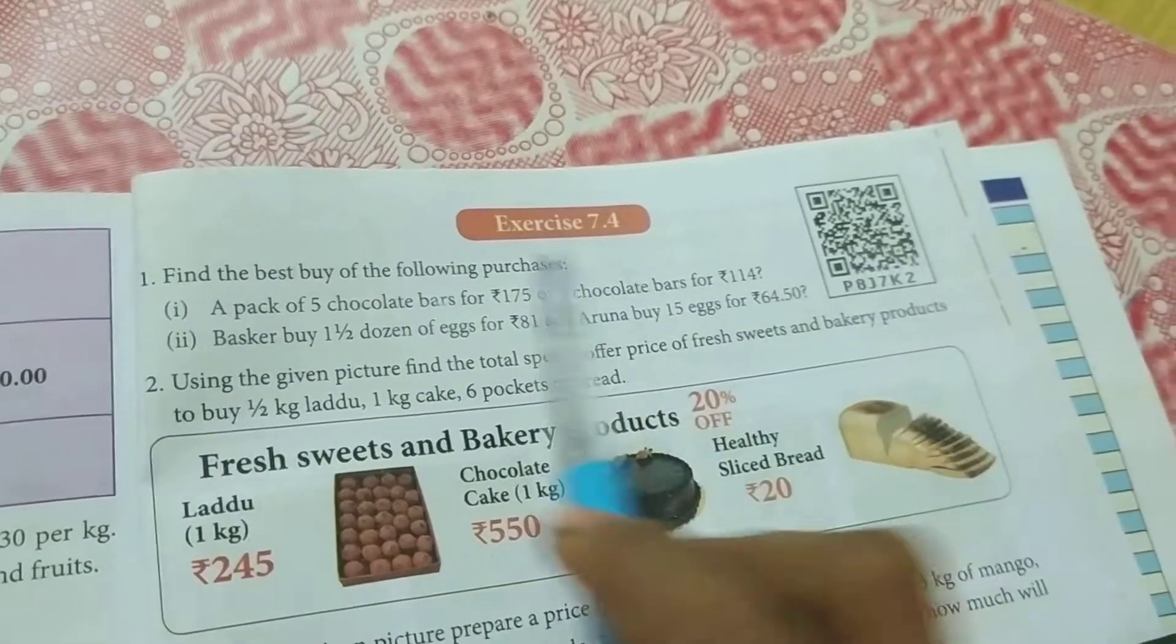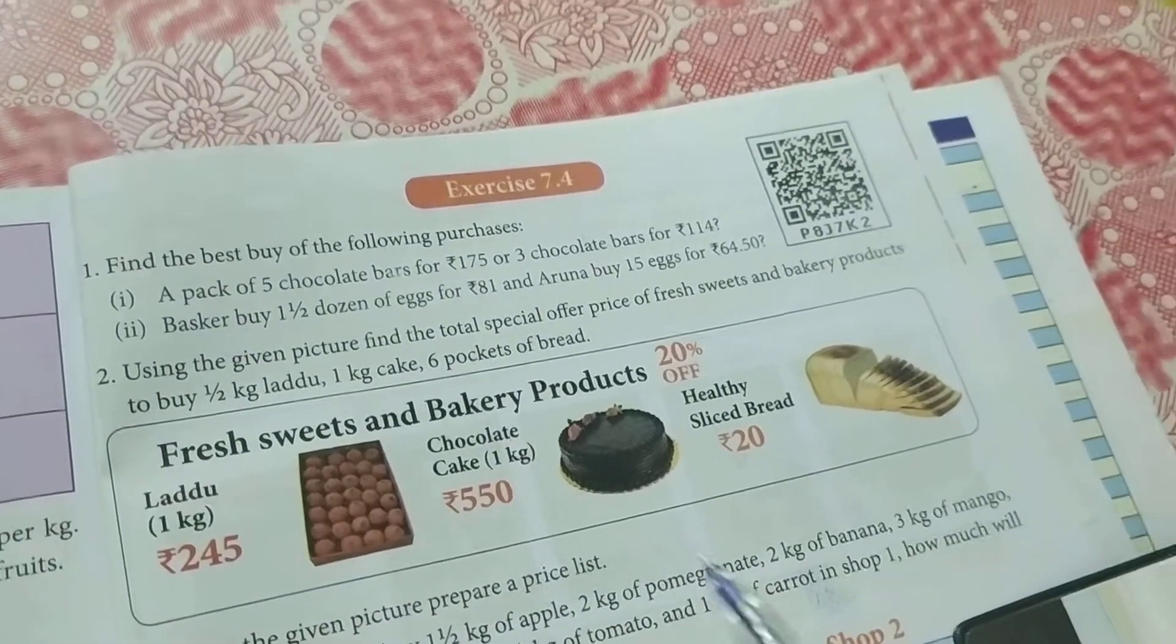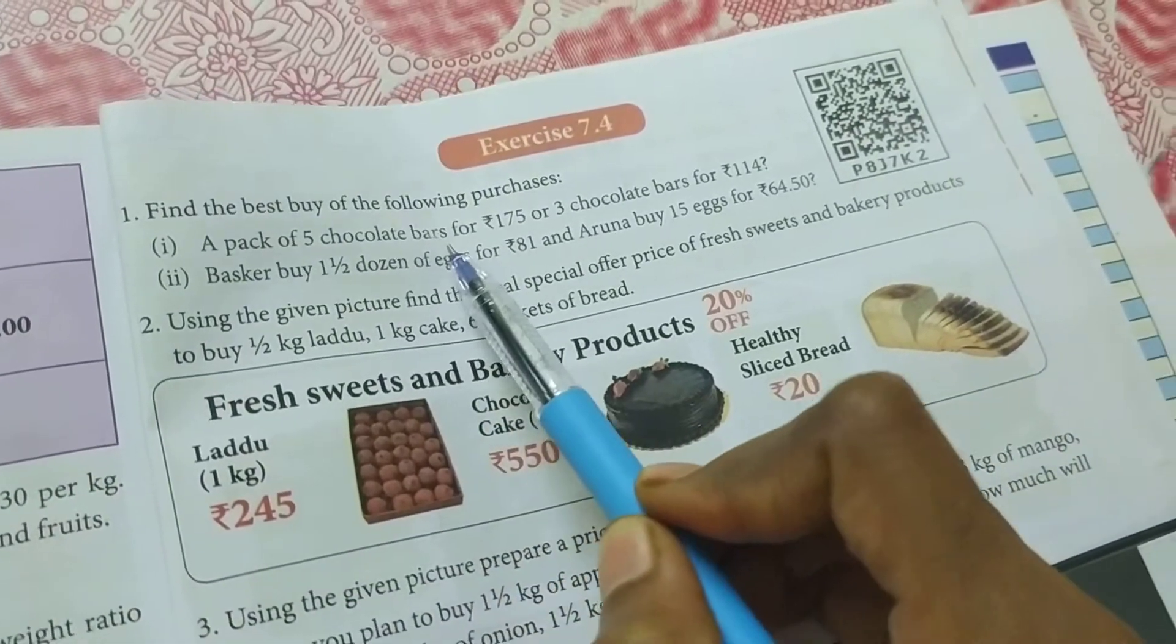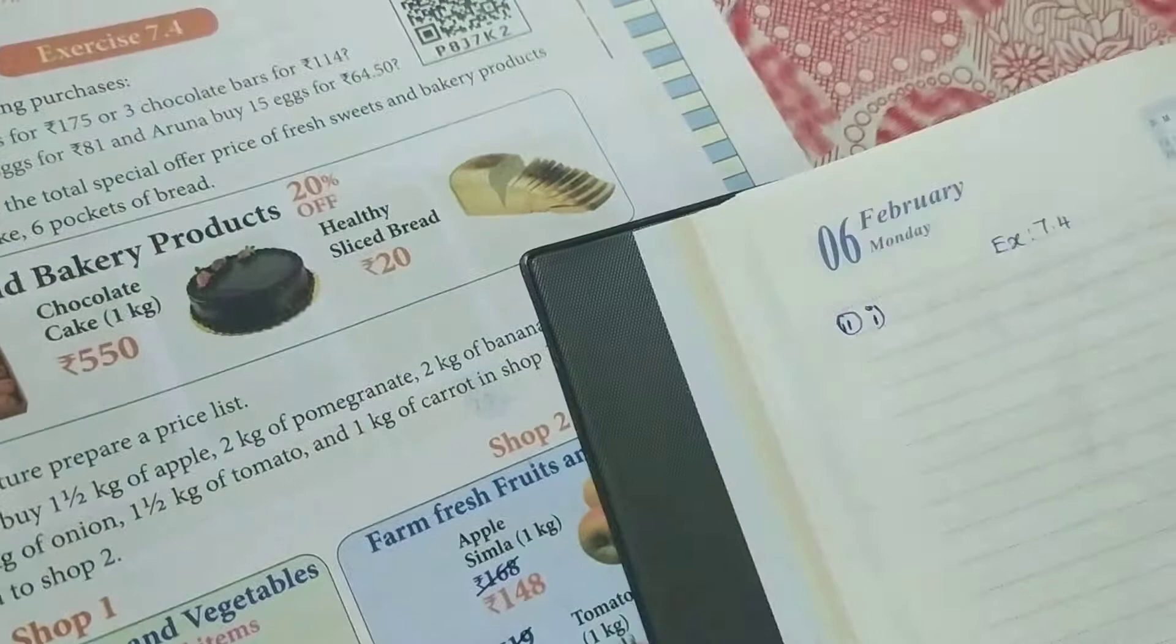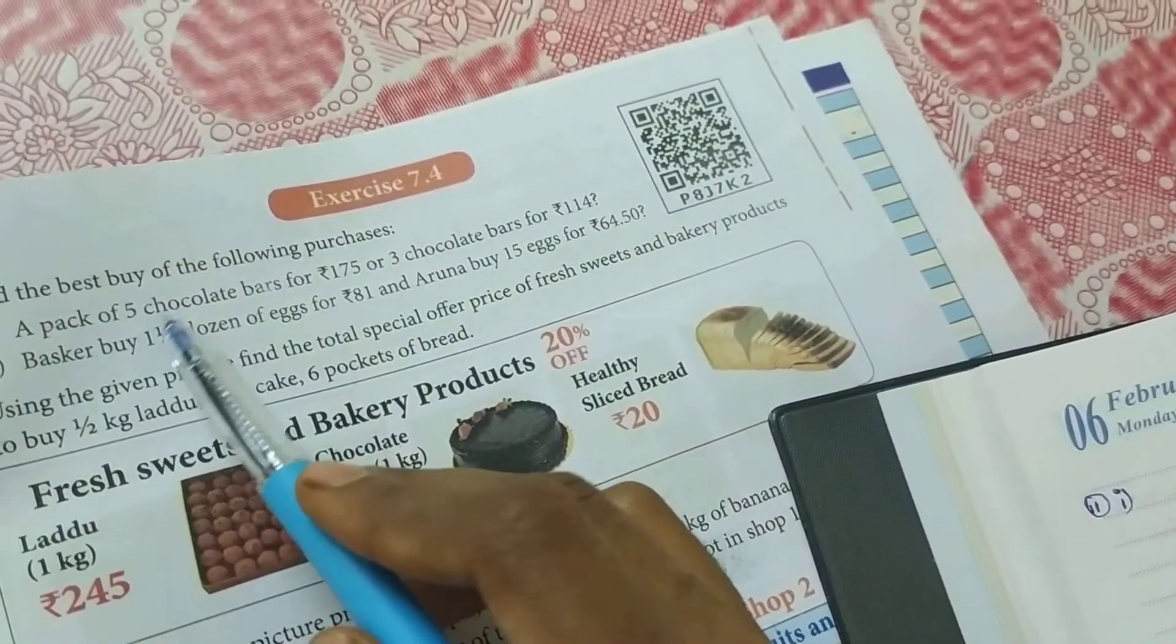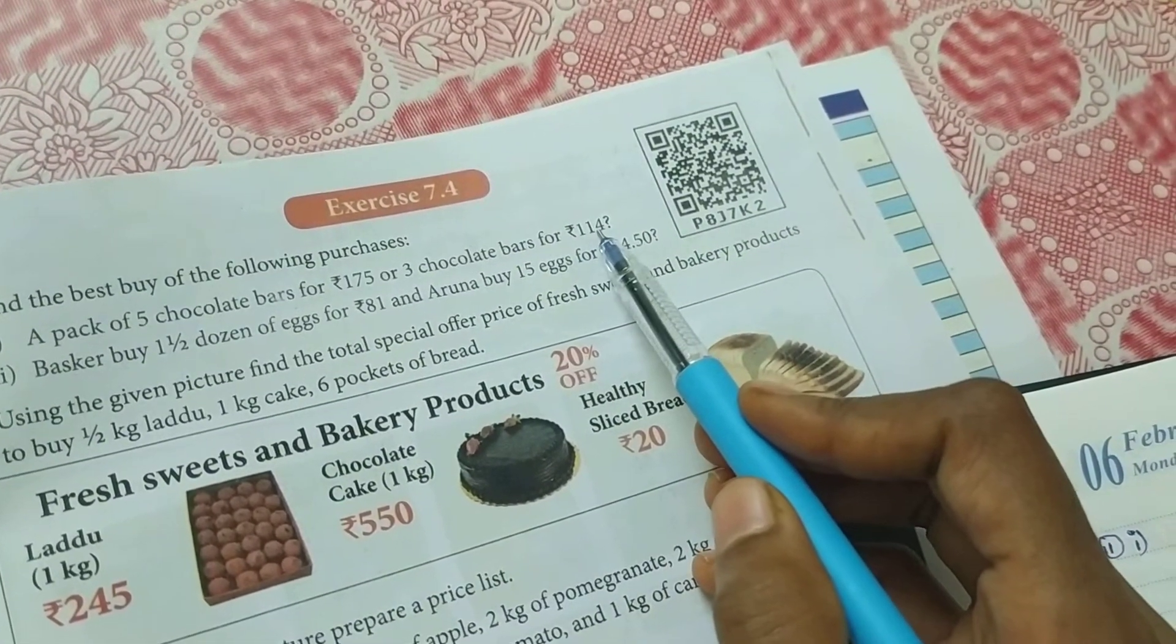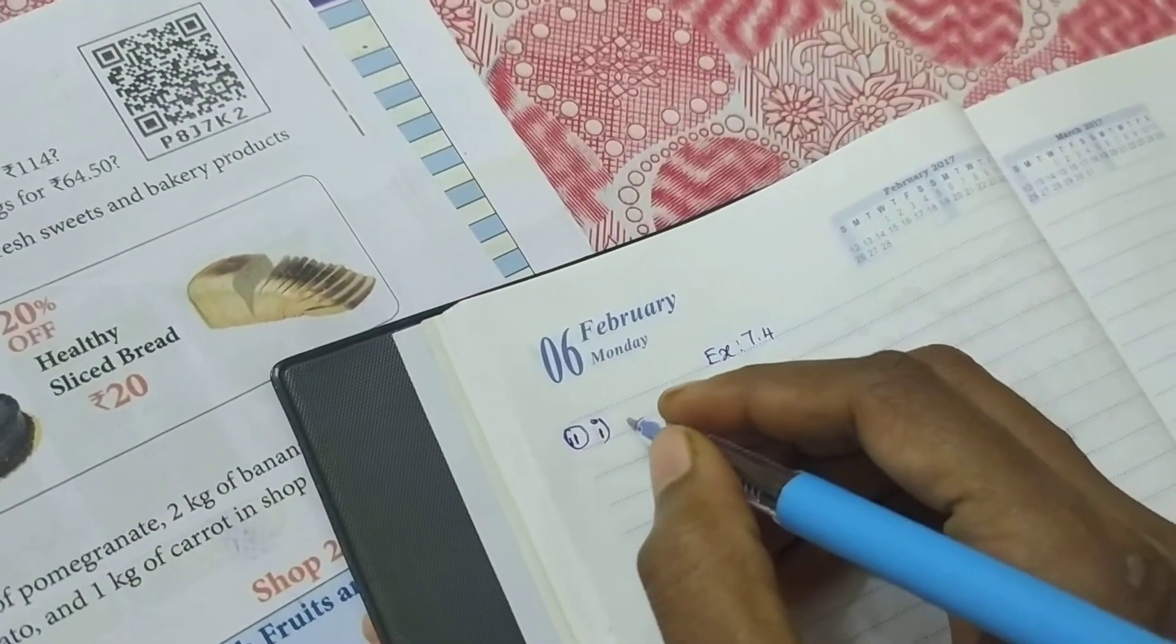Exercise 7.1: We're going to find the best buy of the following purchases. A pack of five chocolate bars for rupees 175, and another pack with three chocolate bars for rupees 144. So what do we have here? We need to determine which one is a good buy.